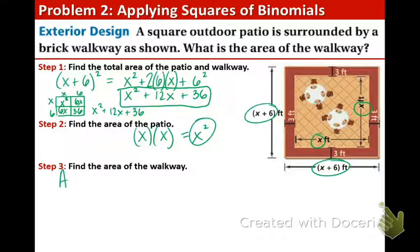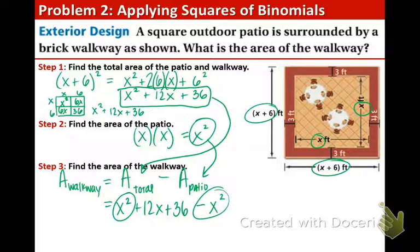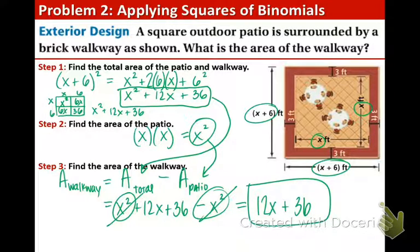Now to find the area of the walkway just as I mentioned, this is how you find it. You take the total area and subtract the area of the patio. So basically we're just going to have to combine like terms now. So this value is going right there, so we have x² + 12x + 36. And this value is going right there, so we have minus x². These guys are like terms and conveniently they cancel each other out because one's positive and one's negative. So the area of the red brick walkway is 12x + 36. And there's our answer. Feel free to rewind if you need to see that example again.